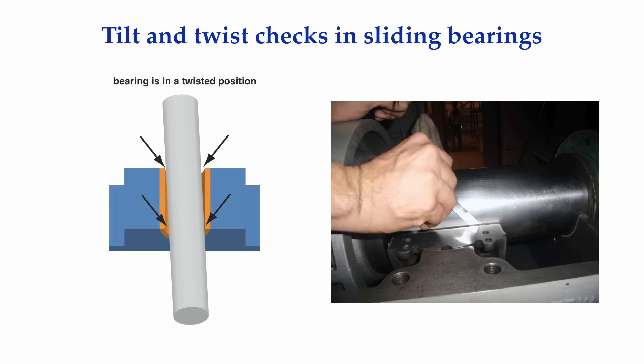Finding a tilt or twist condition is relatively easy. Determining what is causing it and what is required to correct it is far more difficult. Bear in mind that a tilt and twist condition can exist on machinery where the inboard and outboard bearings are held by a common housing like an electric motor.